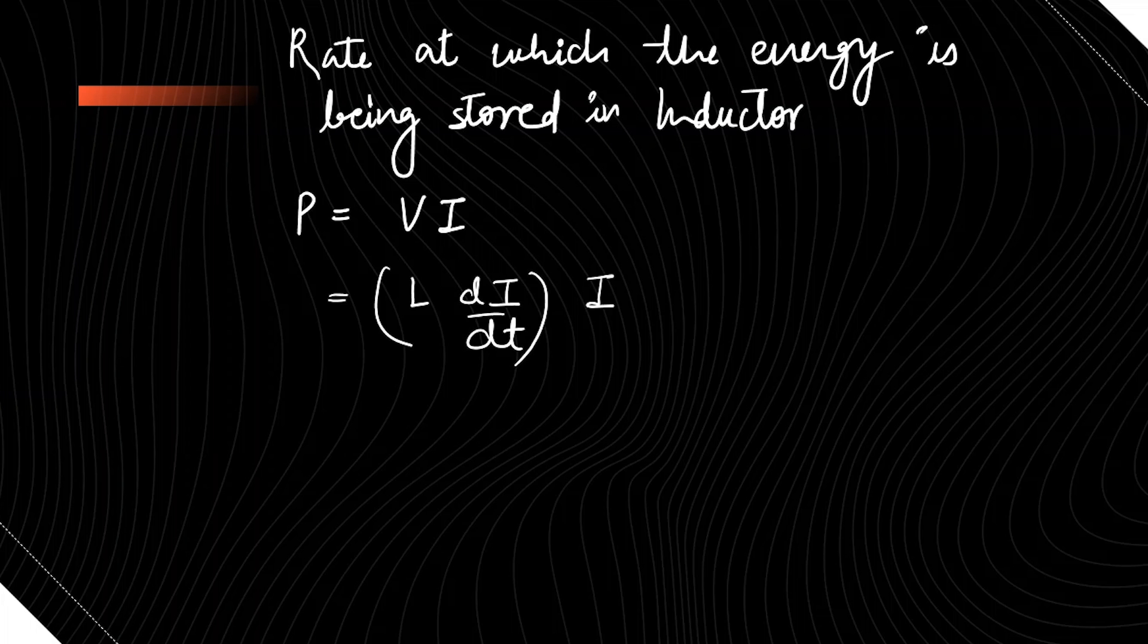Into current. So the inductance is 5 and we have found out this di by dt which is 8 by 5.